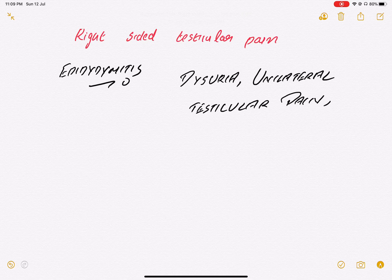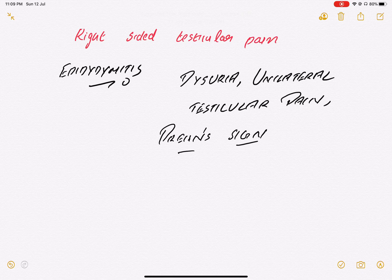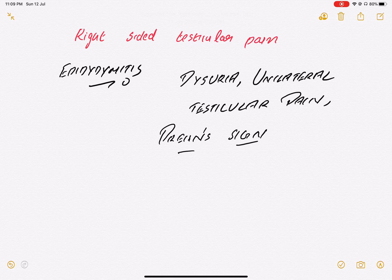Then there is a sign called Prehn's sign. That means if a patient comes to you with the pain and right-sided testicle, and if you elevate the testis, you will see the patient will say the pain is subsiding. The pain is decreasing. That is Prehn's sign, which means decrease in pain.